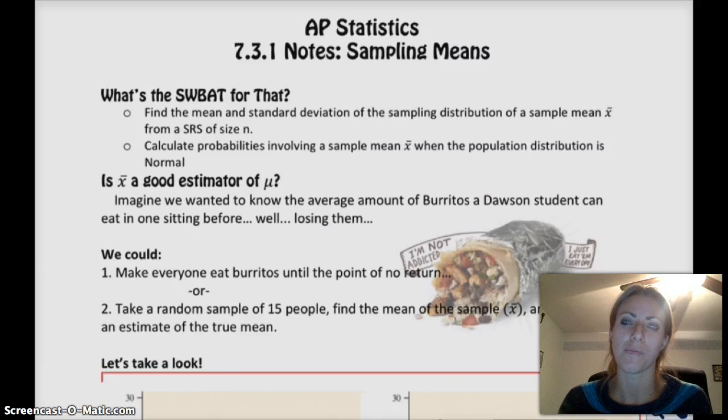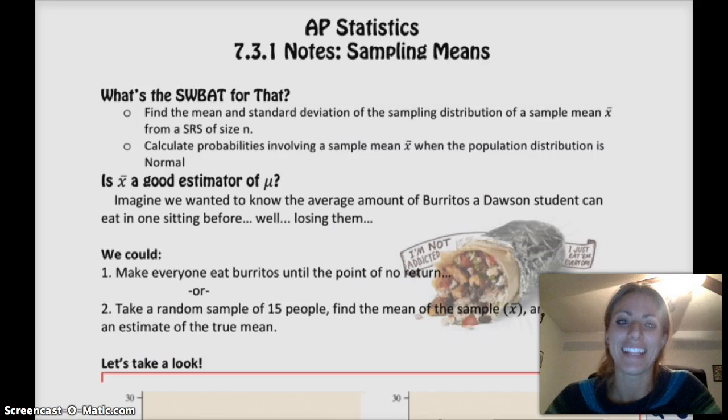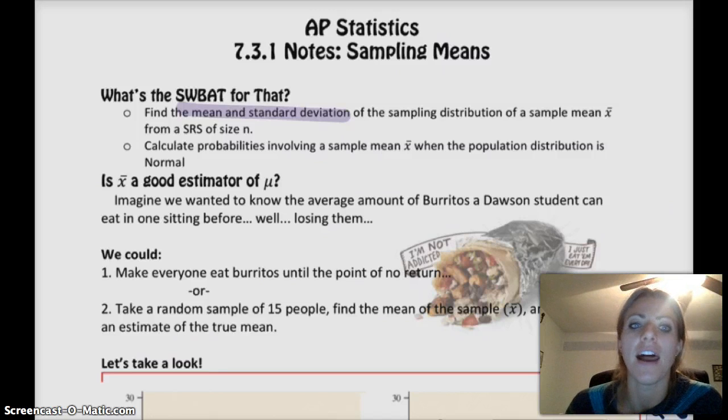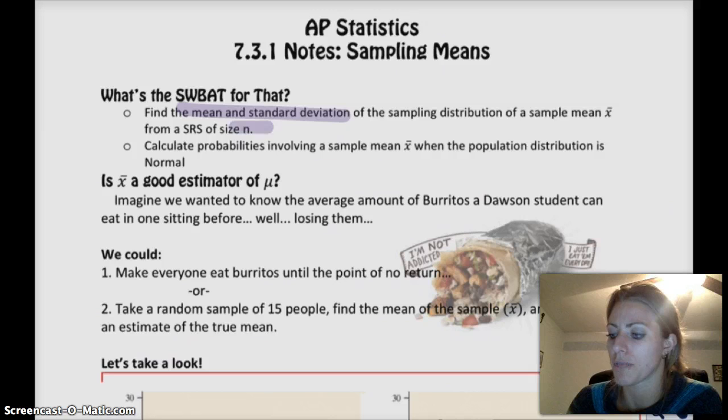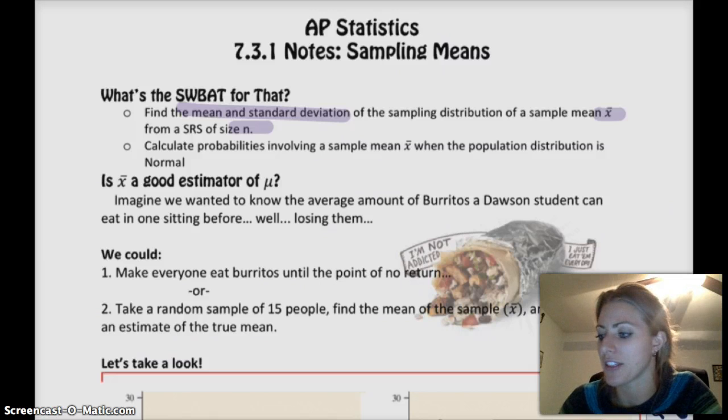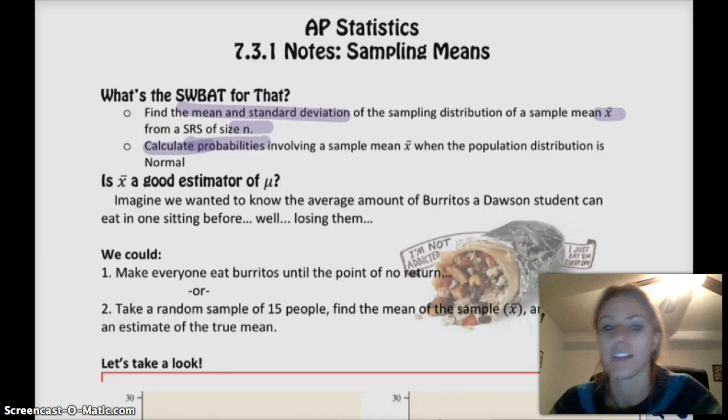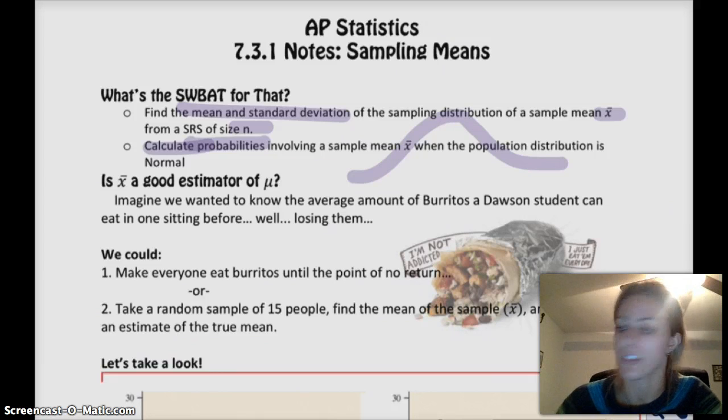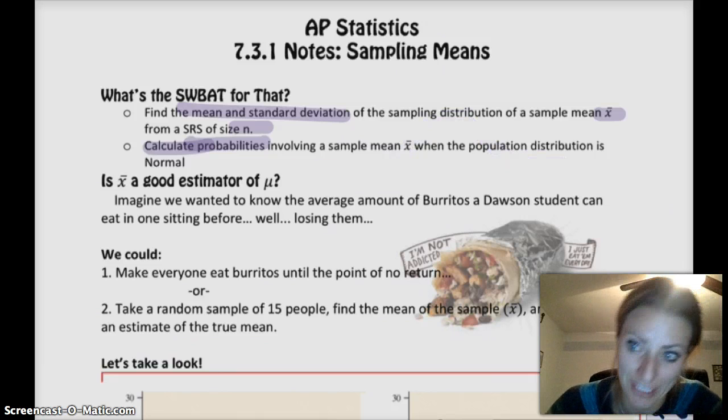So we're going to look at a couple situations. Number one being a burrito eating contest, which I don't know if we should actually do this. It'd be kind of fun, but I don't know. We'll see. Anyways, so that's kind of our goal. We're going to be finding the mean and standard deviation of the sampling distribution of a sample mean from a certain size n of a simple random sample.